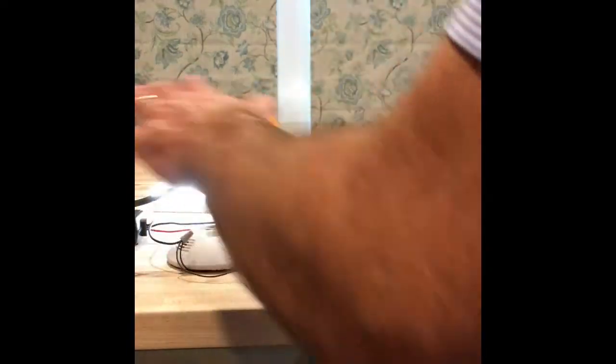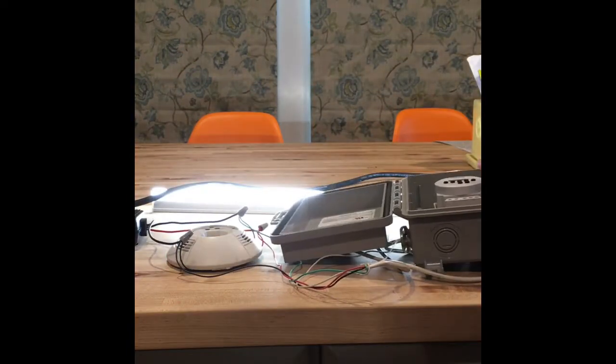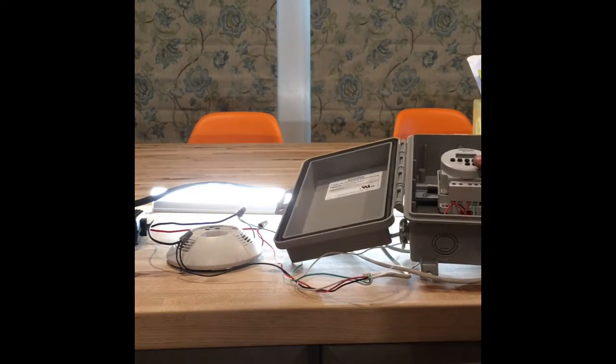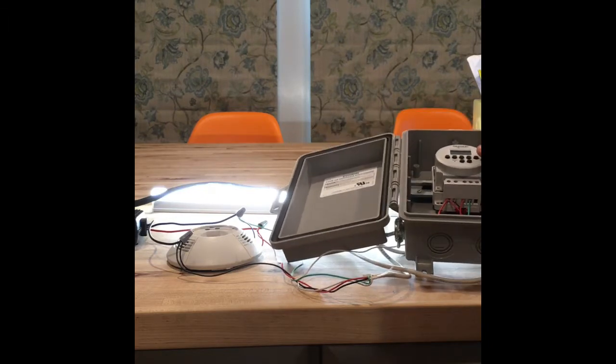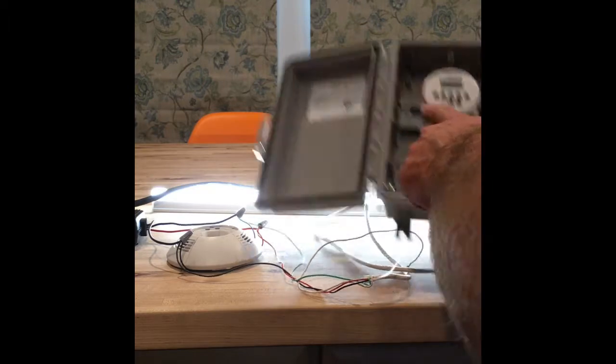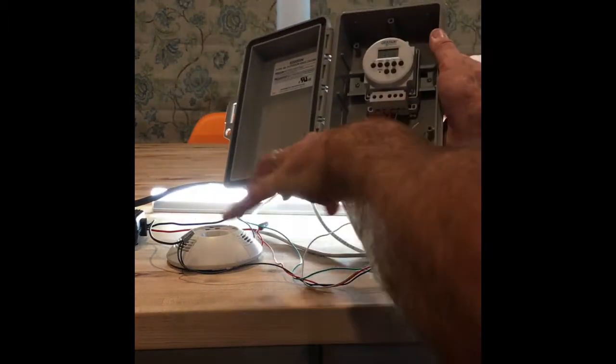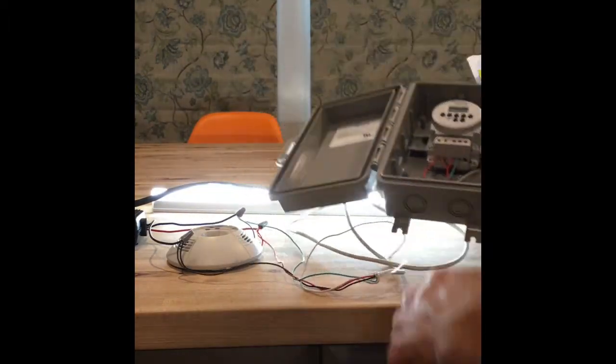Okay, so it senses my motion, right? But if I press the override switch to on, meaning the time clock event is enabled, this contact is now closed, it means essentially another motion sensor is always sensing motion.